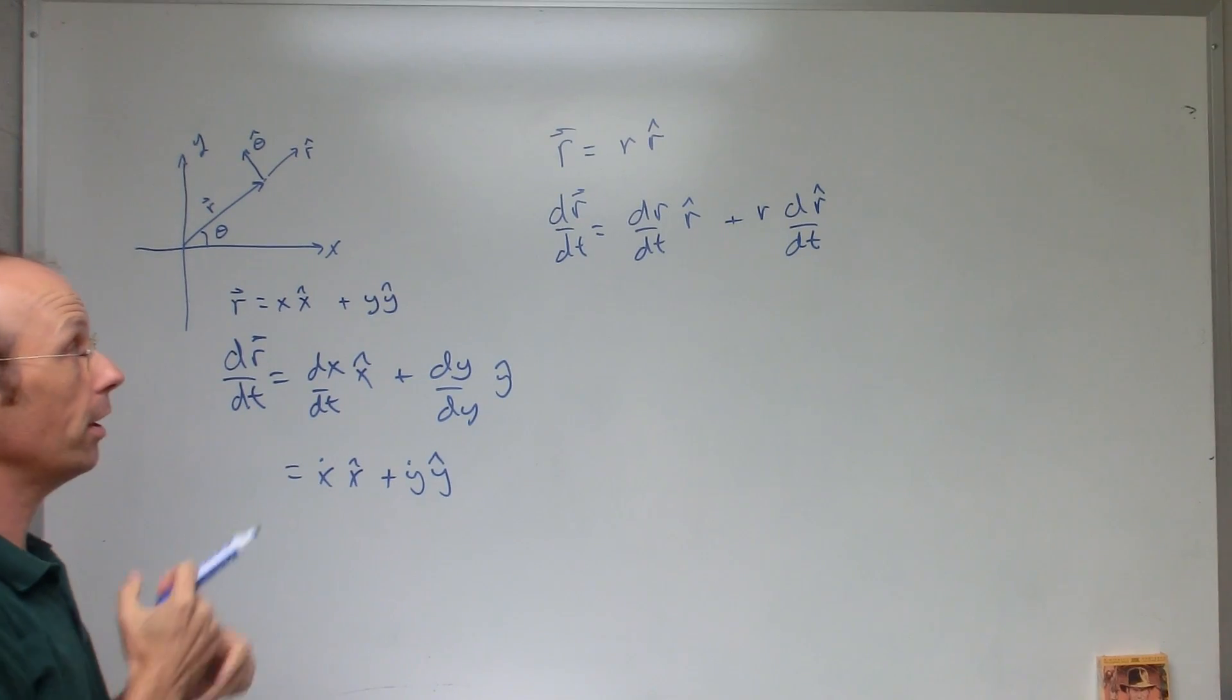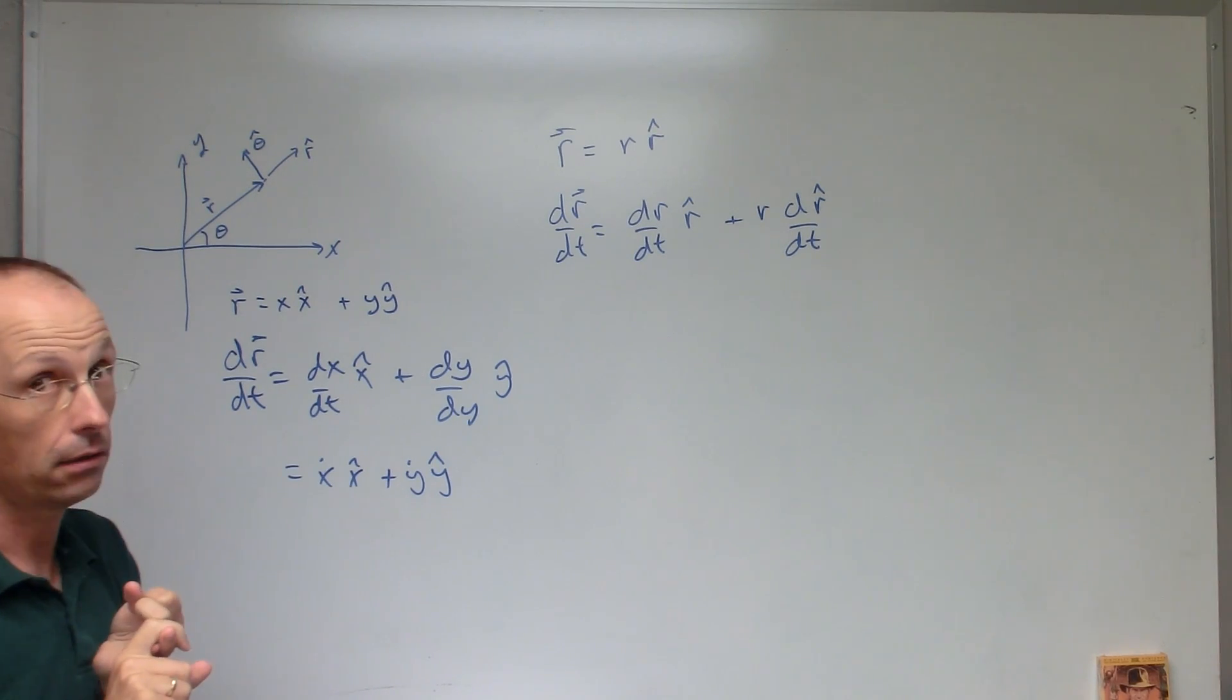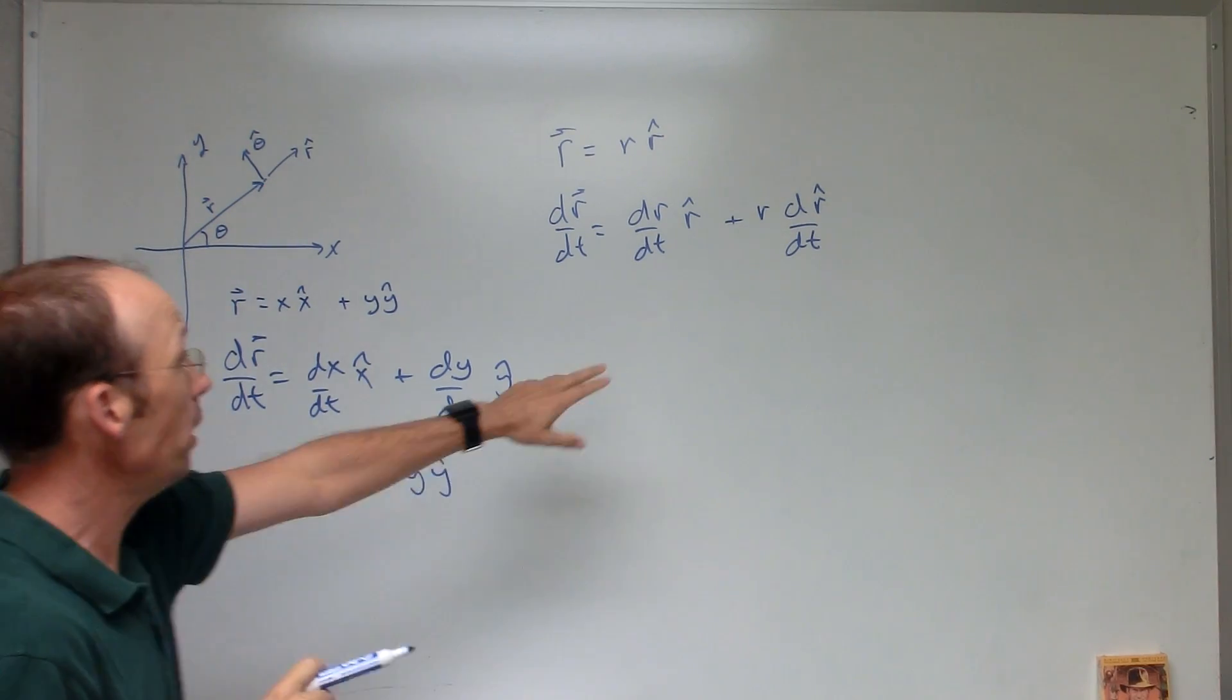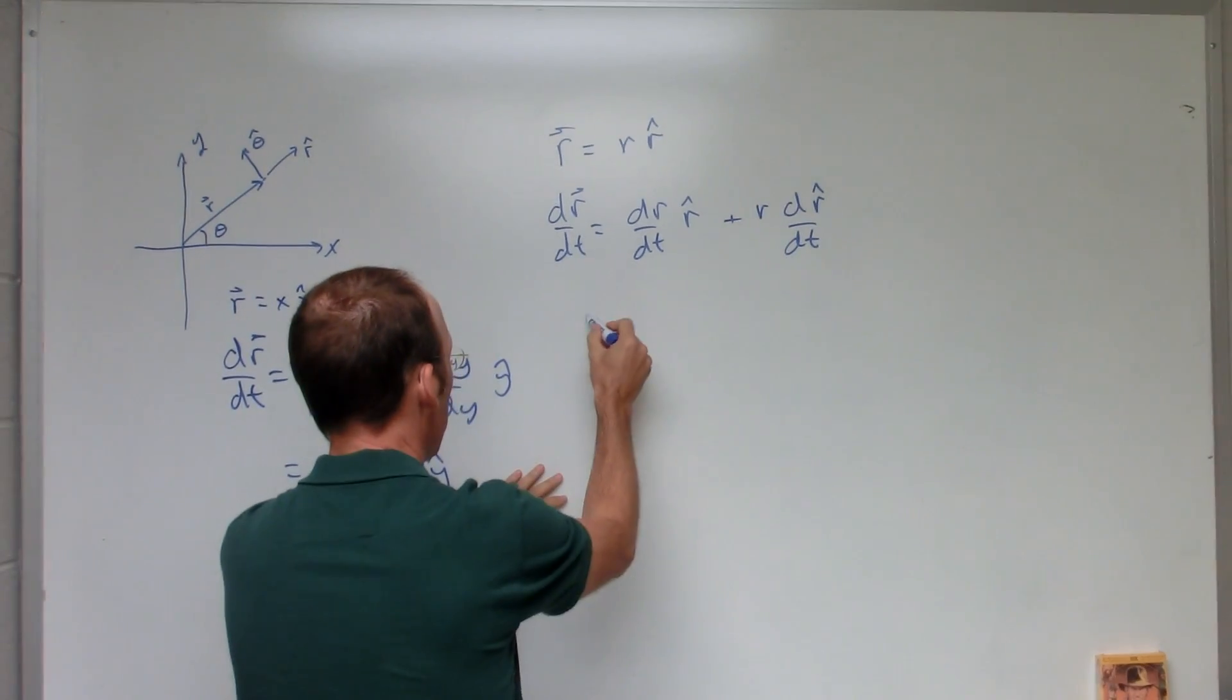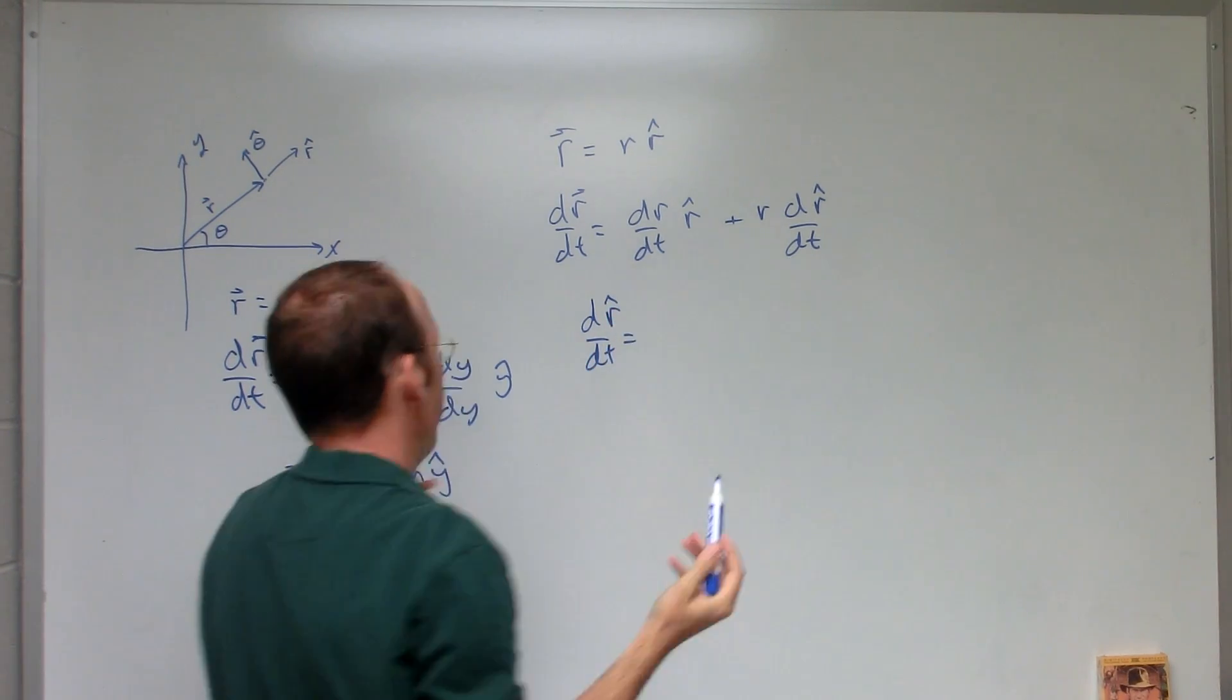But I don't want to leave it like that. I want to write it as a vector in terms of r hat and theta hat. So if I look up here, the question is, how do I get this term? How do I get dr hat/dt? How do I find that?